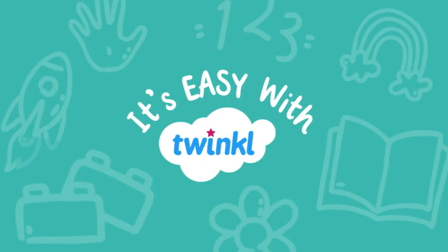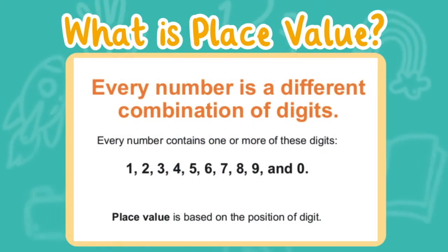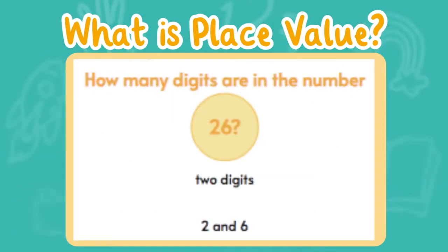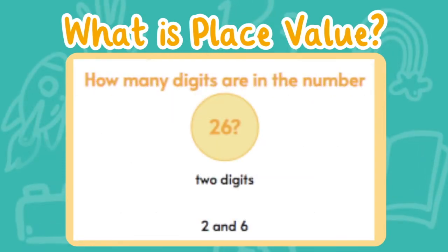It's easy with Twinkle! Today let's learn all about place value. Every number is a different combination of digits. The place value is based on the position of the digit.